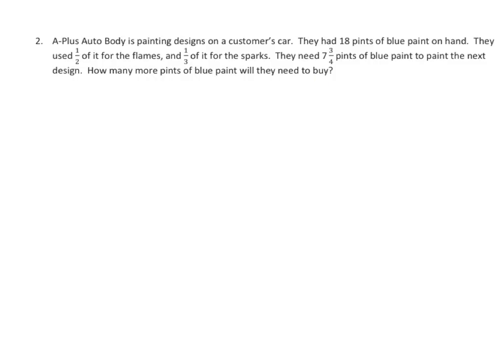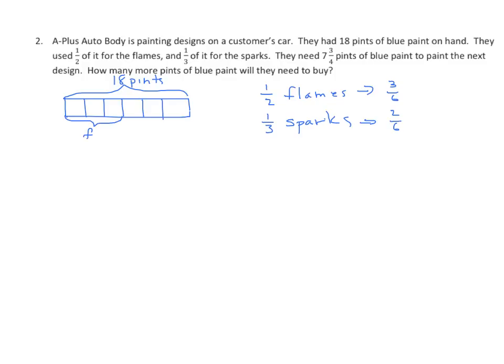There's a couple ways we can do this. I'm going to start with a tape diagram. We're going to look at our fractions and do some thinking. We have 18 pints. Now I want to look at these two fractions. I have one-half for flames. I have one-third for sparks. I am going to find the common denominator for these two, and that would be six. The flames, one-half, equals three-sixths, and the sparks equals two-sixths. Now I can take my tape diagram and partition it into six equal parts.